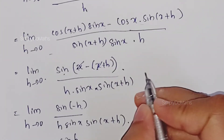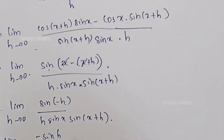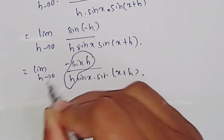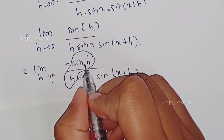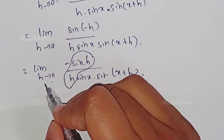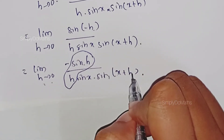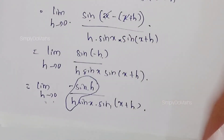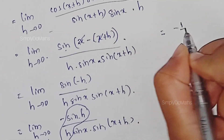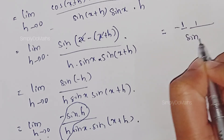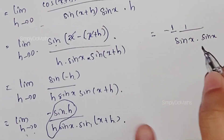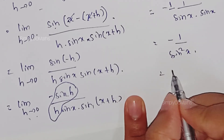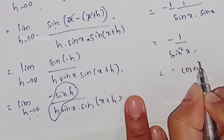Now this can be simplified: sin(θ)/θ as θ tending to 0 equals 1, so this term becomes −1 as we apply the limit. For sin(x+h), as h tends to 0, h becomes 0, so sin(x+h) becomes sin(x). This equals −1 times 1 divided by sin(x)·sin(x), which is −1 divided by sin²(x). And 1/sin²(x) is cosec²(x).